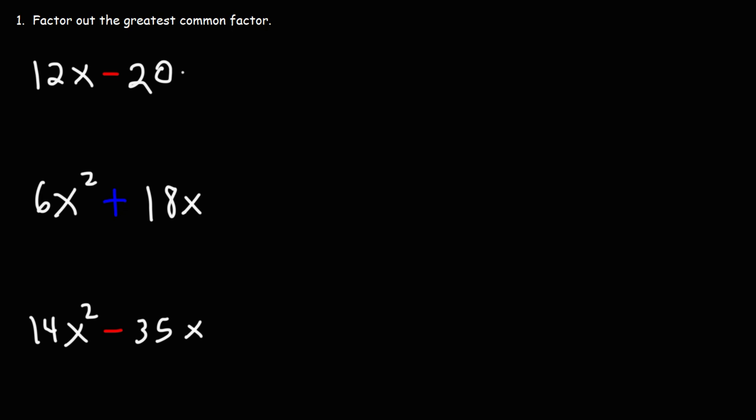We have a binomial, which consists of two terms: 12x and negative 20. How can we take out the greatest common factor? What is the highest number that goes into 12 and 20? They are multiples of 2 and 4, but 4 is greater than 2, so 4 is going to be the greatest common factor of 12 and 20.